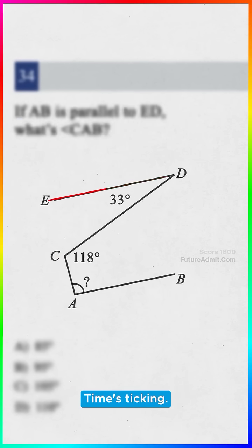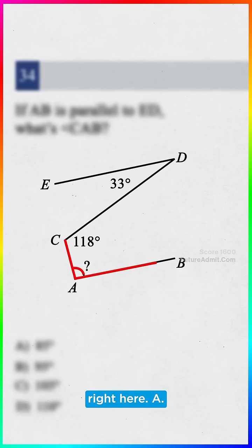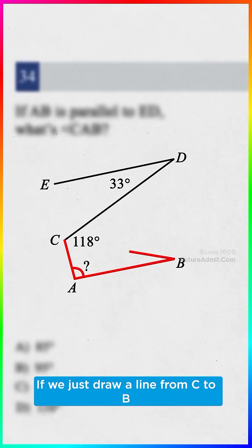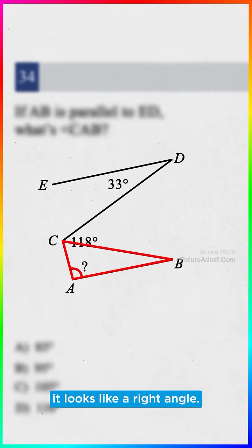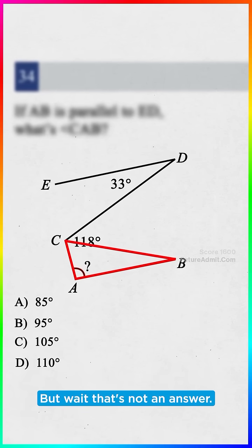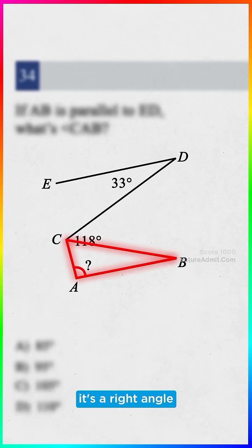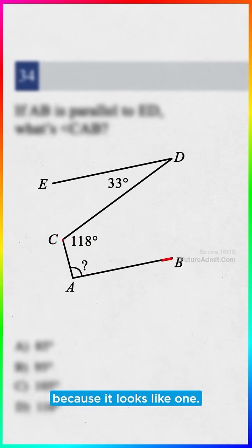Okay, focus, time's ticking. So we want to find this angle right here, A. If we just draw a line from C to B, it looks like a right angle. So A is 90, but wait, that's not an answer, and two, we can't just assume it's a right angle because it looks like one.